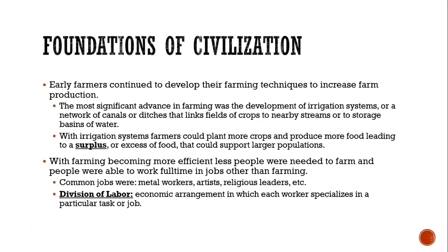Early farmers continued to develop their farming techniques to increase farm production. The most significant advancement was the development of irrigation systems — ditches that would connect fields to water sources, allowing crops to be watered on a more regular basis. With irrigation systems, farmers could plant more crops, which led to a surplus or excess of food that could support larger populations.